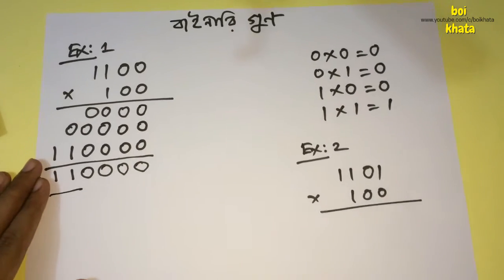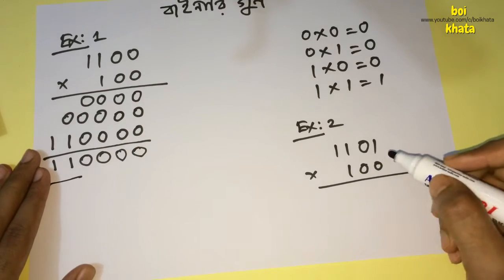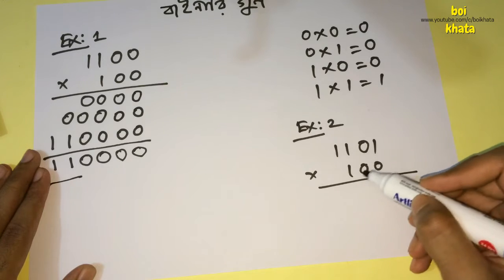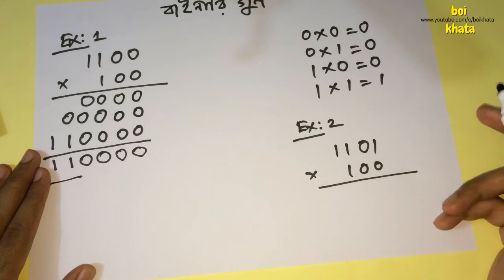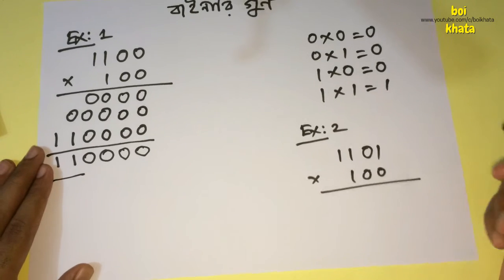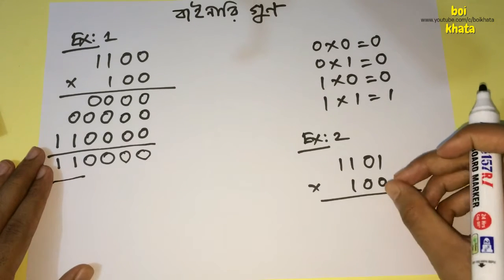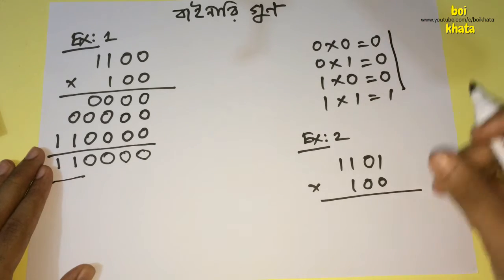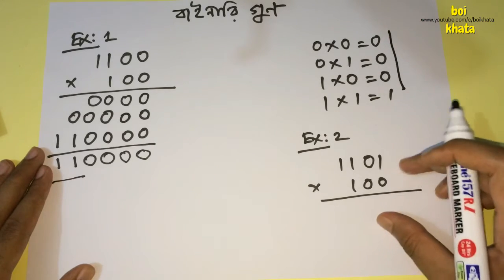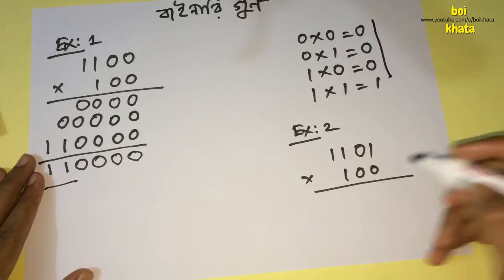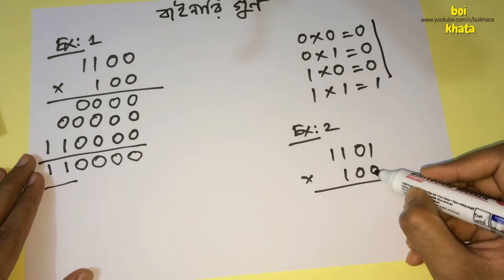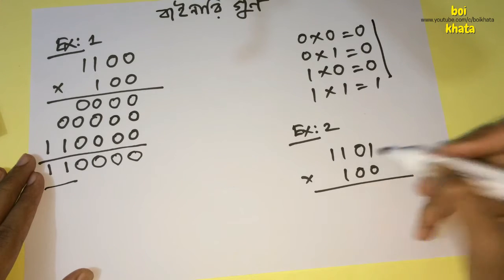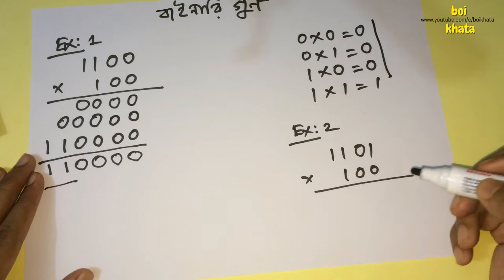As before we move on to 2, we will take this example, and let's take this 1 into 1, 0, and we will take 1, 0, 0, 1. The result is example 1. Here we will take this 1, 0, 0, so we will take the value.